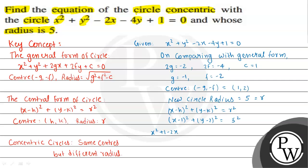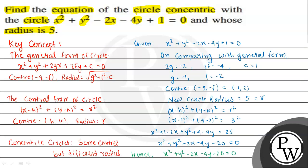Expanding: x² + 1 - 2x + y² + 4 - 4y = 25. Rearranging: x² + y² - 2x - 4y + 1 + 4 - 25 = 0, which gives 5 - 25 = -20. So the required equation of the circle is x² + y² - 2x - 4y - 20 = 0.